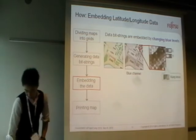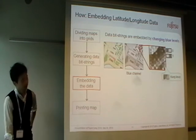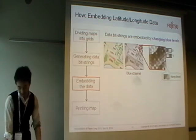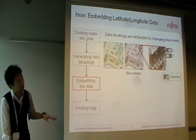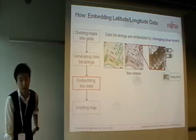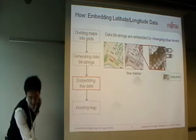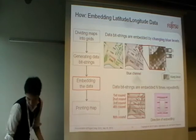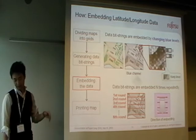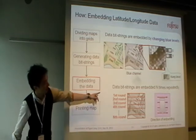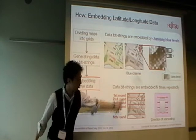In order to retain the image quality, if the difference from the original gradation level exceeds the predefined threshold, the blue level will remain unchanged. Another feature of our embedding system is that the data bit strings are embedded n times repeatedly from top to bottom.